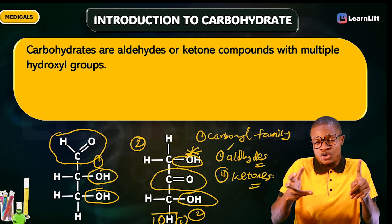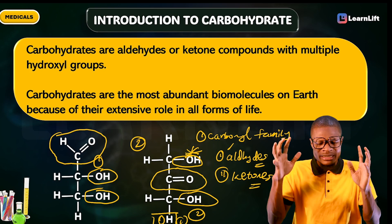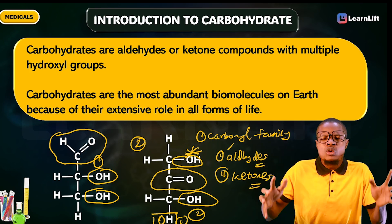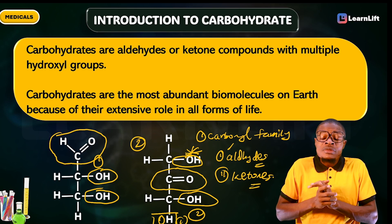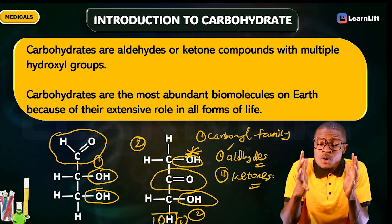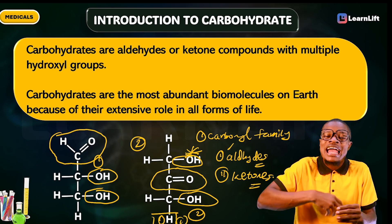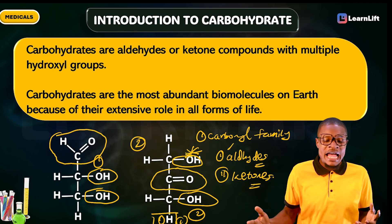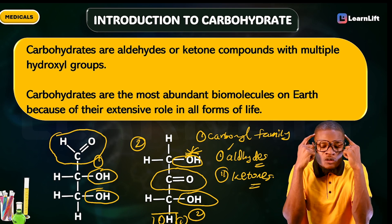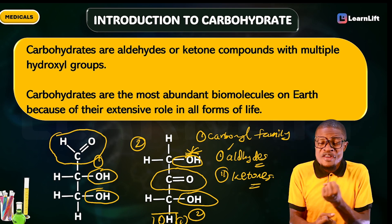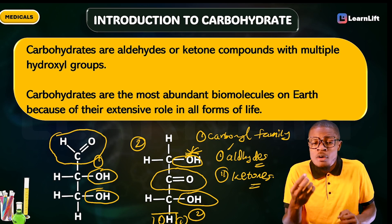Carbohydrates are aldehydes or ketone compounds with multiple hydroxyl groups. Another key point: carbohydrates are the most abundant biomolecules on earth. This is because of their extensive role in all forms of life. You need energy — carbohydrates. Your brain needs food — carbohydrates. They are essential and the most abundant biomolecules on earth.